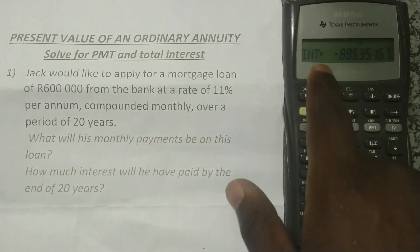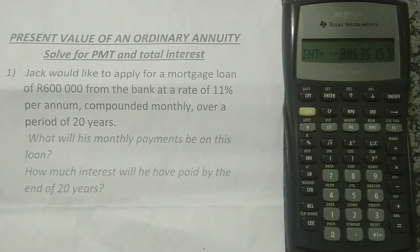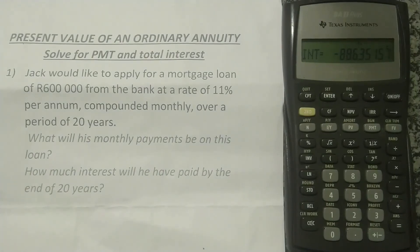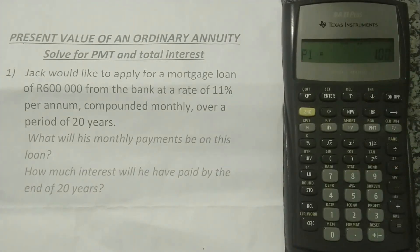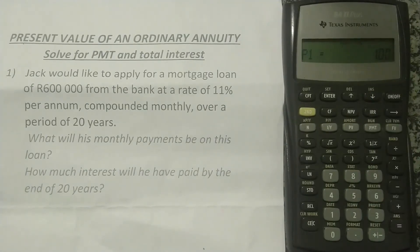Pressing the down arrow again shows the total interest paid: R886,351.57. The interest payment on this mortgage is way higher than the principal. You borrowed R600,000 but paid nearly R900,000 just in interest. That is the power of compounding.